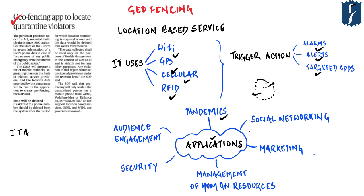In social networking, location-based filters, stickers, and other shareable content are made possible with geofencing. In marketing, geofencing is very popular because it is an easy way for businesses to deliver in-store promotions, alerting you right as you step in or near their store. In management of human resources, companies doing field work — for example, oil extraction — use geofencing to monitor the time a person spends near an oil well.